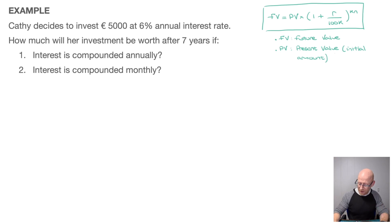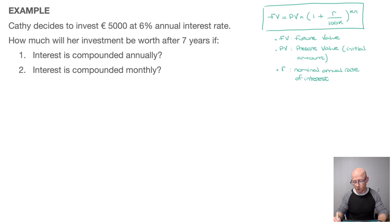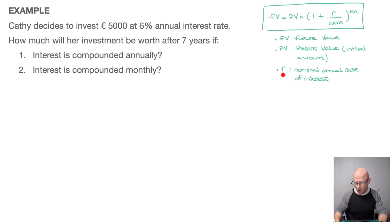The next thing we have is R, placed on the numerator. R refers to the nominal annual rate of interest — put simply, it's the annual interest rate we're given for the investment. So for example, if the annual rate is 5%, then R equals 5. Or if the annual rate is 7.3%, then R equals 7.3.